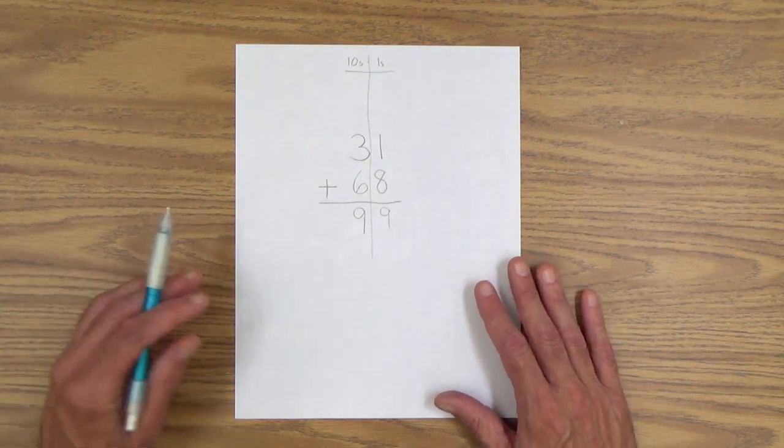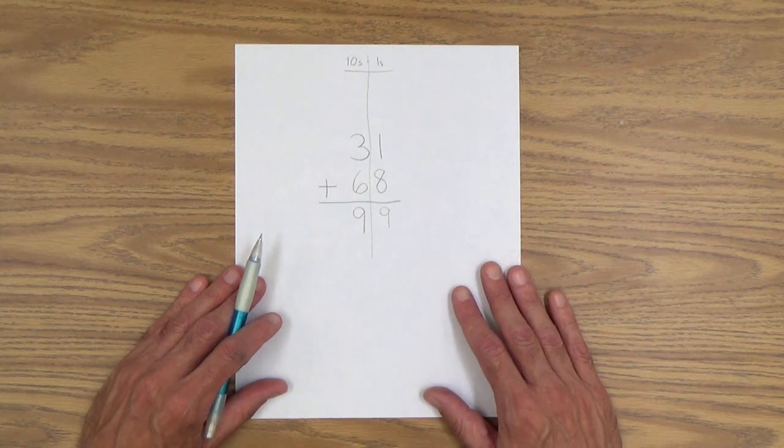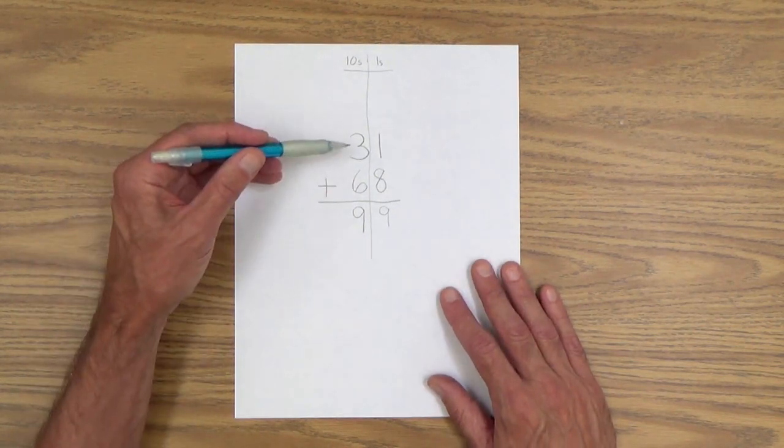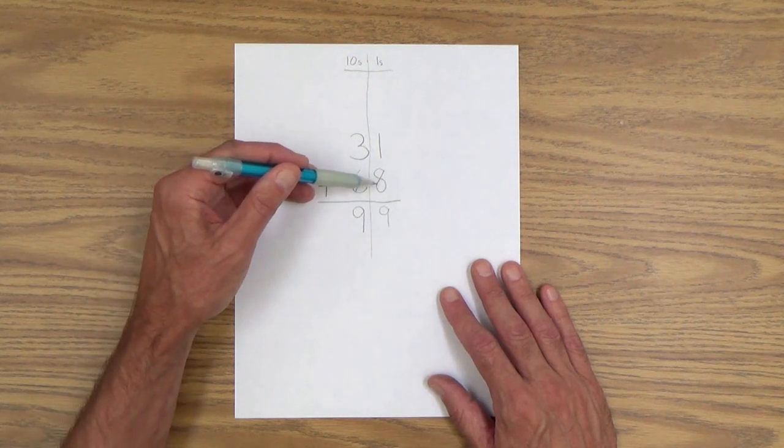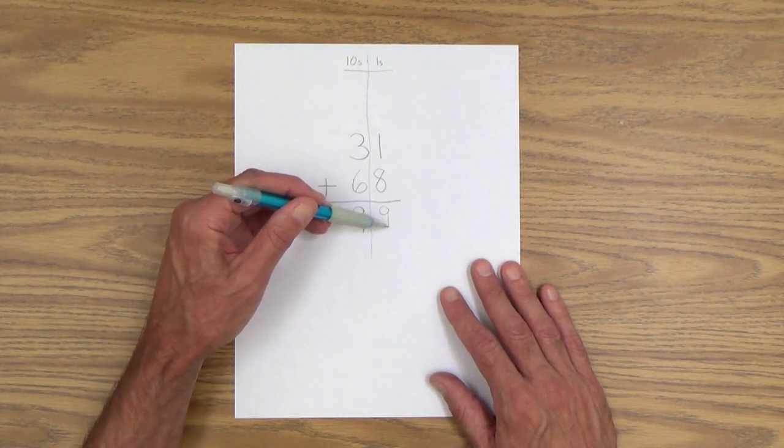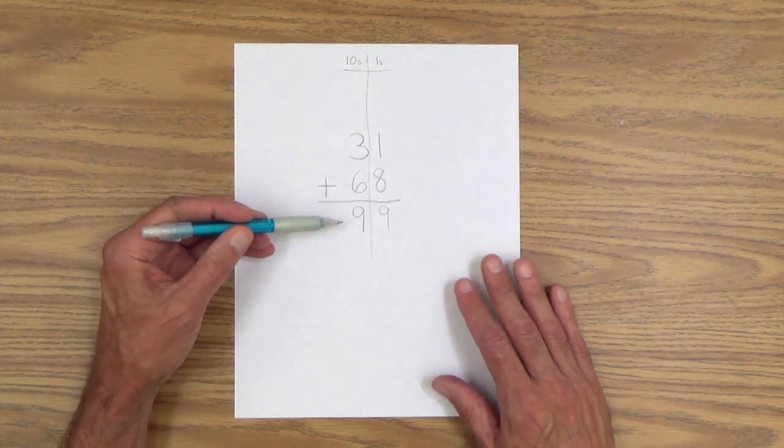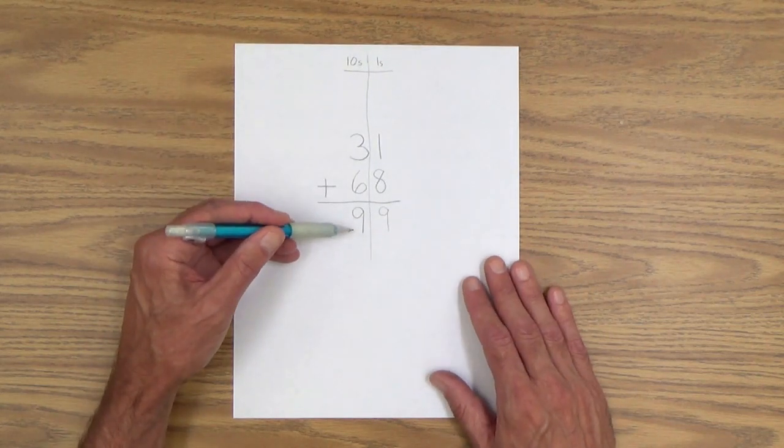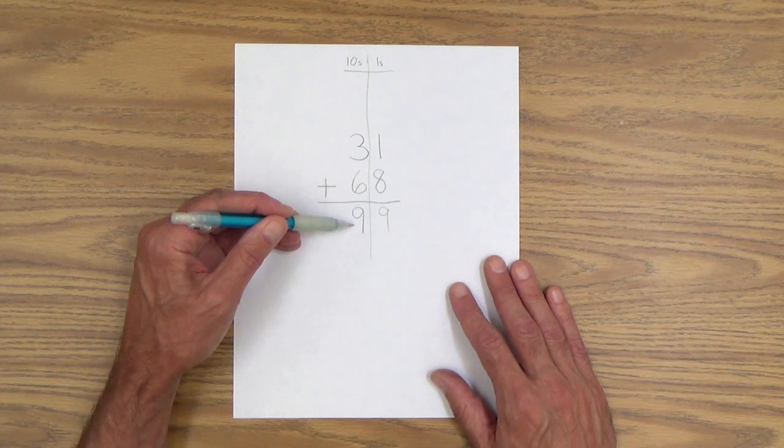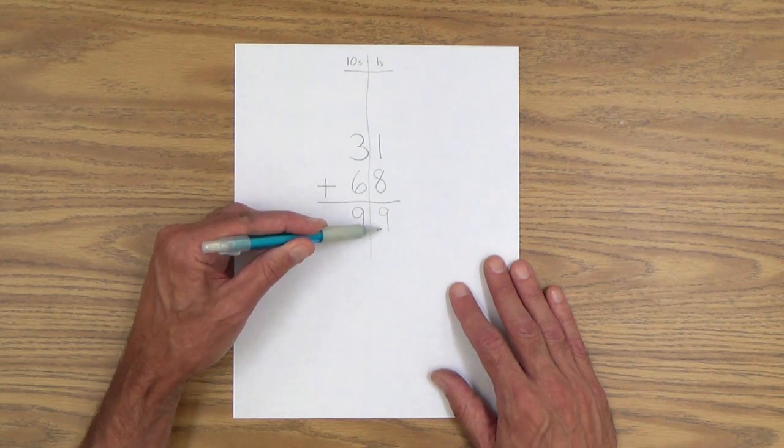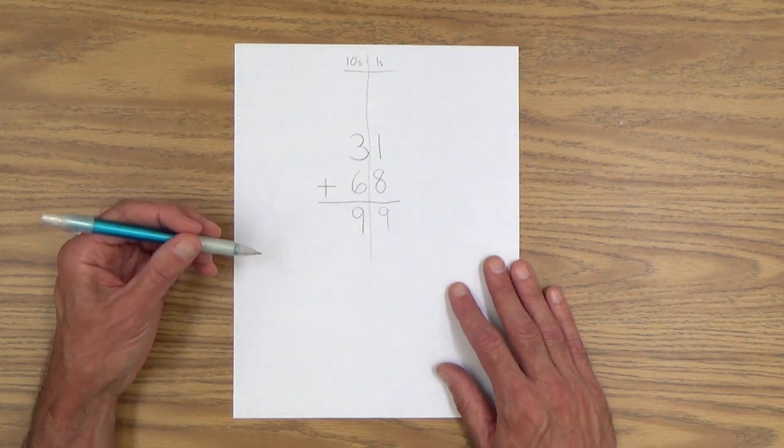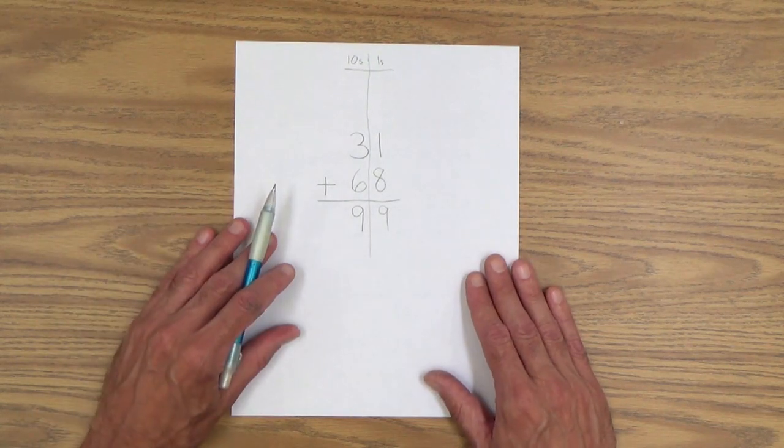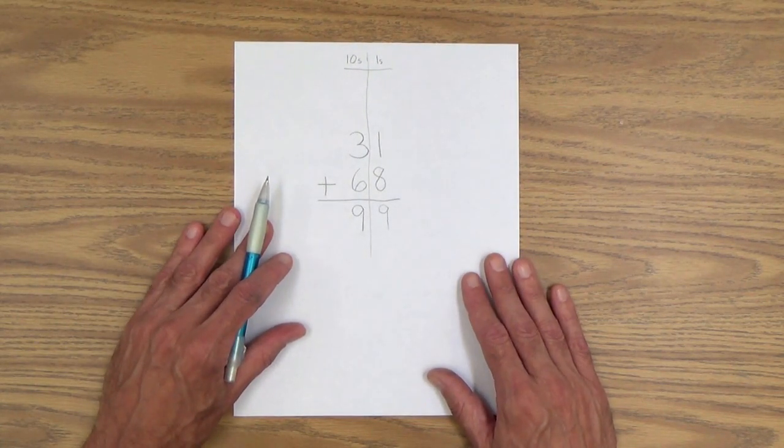And then of course you would want her to read back the entire problem and the answer. 31 plus 68 equals 99. And of course you want to emphasize that 99, just as you did with these numbers, 99 is nine groups of 10 and nine more. And of course, if your child is rock solid with place value, they will have no problem understanding that.